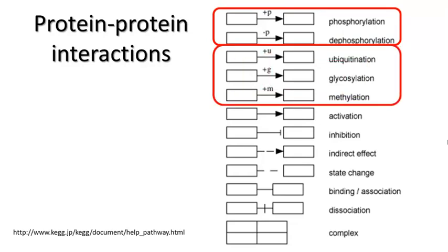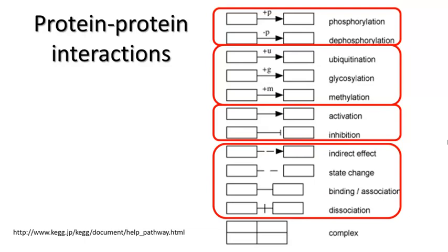Ubiquitination, glycosylation, and methylation, marked with a plus U, plus G, or plus M on the arrow. Activation and inhibition are marked with a standard arrowhead or a T-head. Other types of effects, such as indirect effect, state change, binding association, and dissociation are marked with different arrows.